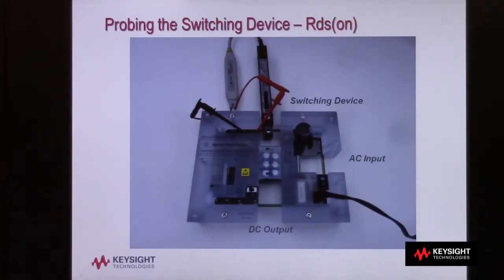The first task in making an RDS-ON or VCE saturation measurement is to probe the switching device with voltage and current probes. You'll typically need a high voltage differential probe and a clamp-on Hall effect current probe. This particular power supply demo board has PCB current loop traces built right in to make current probing easy.